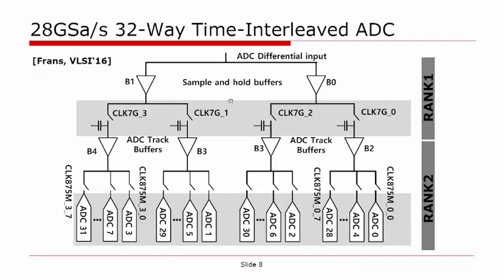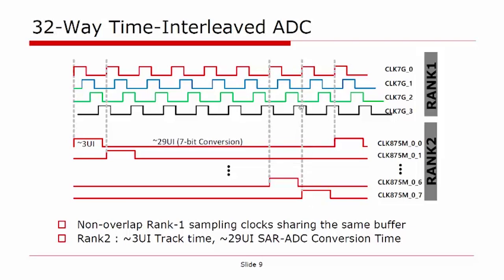The 28 GHz symbol-per-second 32-way time-interleaved ADC is shown in this figure. The ADC input is first interleaved by a factor of 4 using 4 phases of a 7 GHz rank-1 sampling clock. Each phase of the rank-1 sample is then interleaved by another factor of 8 using 8 phases of an 875 MHz rank-2 sampling clock. Each rank-2 sample is converted into 7-bit digital symbols. The top figure shows the timing diagram of the 4-phase 7 GHz rank-1 clock. Opposite phases such as phase 0 and phase 2 are made non-overlapping so they can share the same input buffer. The bottom figure shows the timing diagram of the 8-phase 875 MHz rank-2 clocks associated with phase 0 of the 7 GHz rank-1 sampling clock.